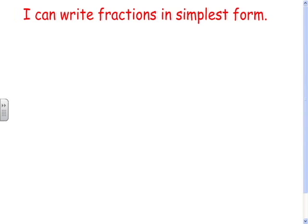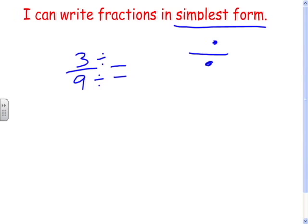Let's take a fraction like 3 ninths. What you want to do is find a number that you can divide both numbers by. To find simplest form, we will always be dividing. One of the rules of fractions is that whatever you do to the numerator, you must do the exact same thing to the denominator, and vice versa.